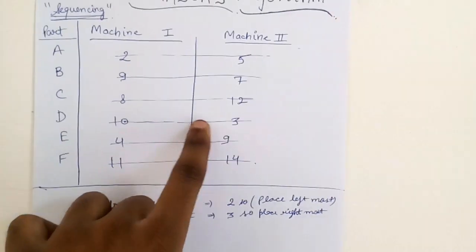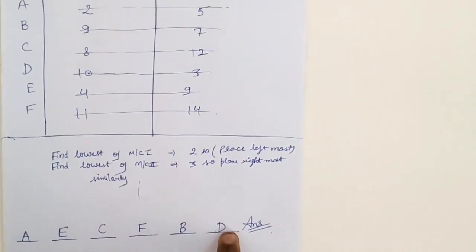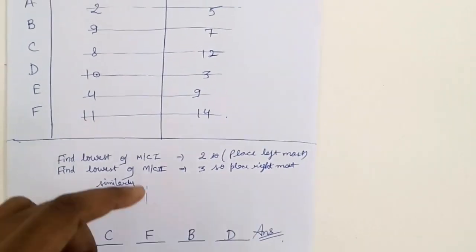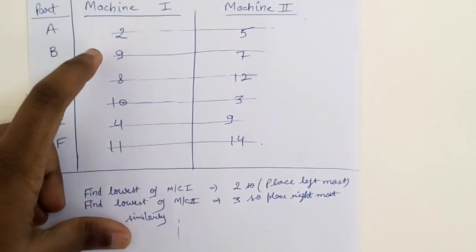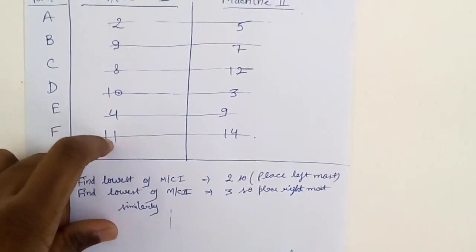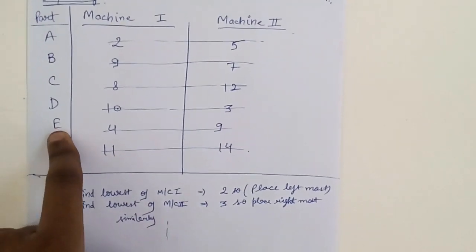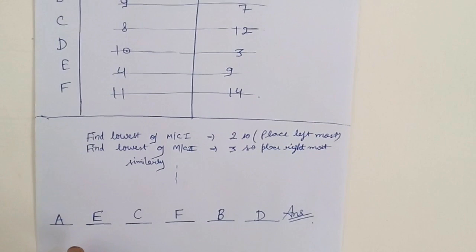Again go on machine one. Now nine, eight, four, and eleven will remain. Minimum is four, so you strike off this row. Corresponding to that is part E, so you place E on the leftmost available position.